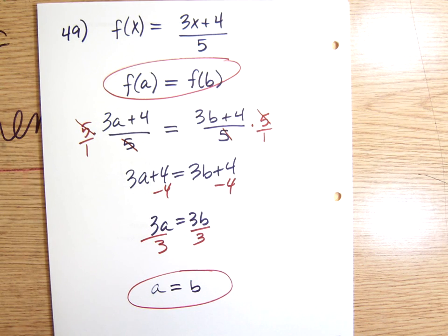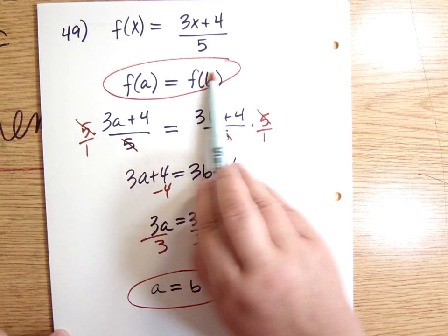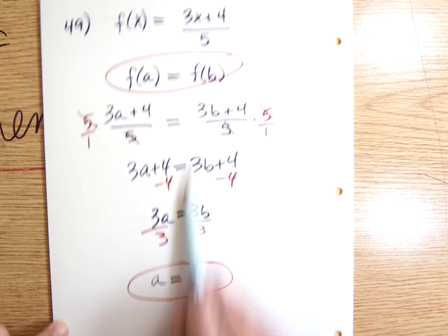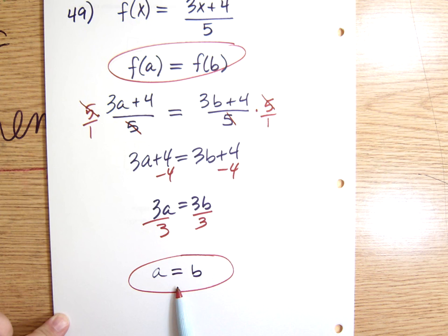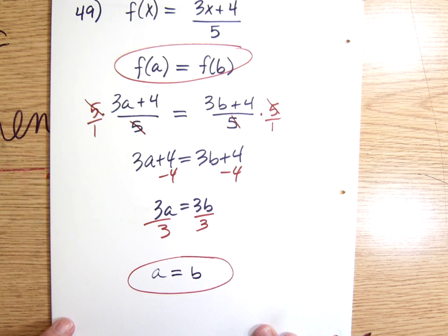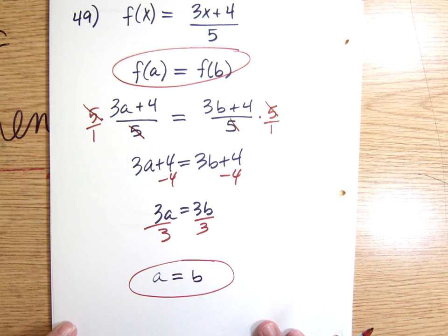And I have shown that when this is true, it leads to this being true. Another way of putting that is when my y values are the same for two different values of x, it turns out really they're not two different values of x, they're the same value of x. So if I get the same y value, it's because I plugged in the same x value. I'm not going to plug in two different values of x and get the same y value.